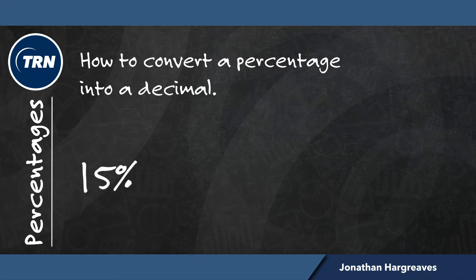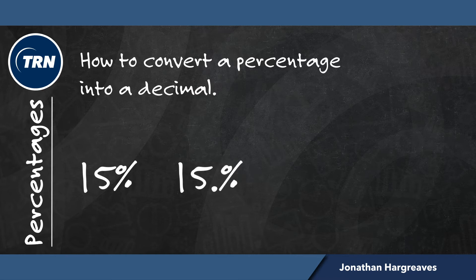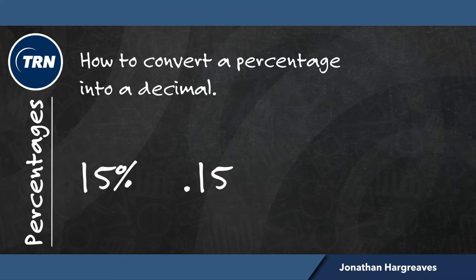To convert a percentage into a decimal, let's write our figure of 15%. We then place a decimal point before the percentage sign and then move it two decimal places to the left, and then remove the percentage sign.